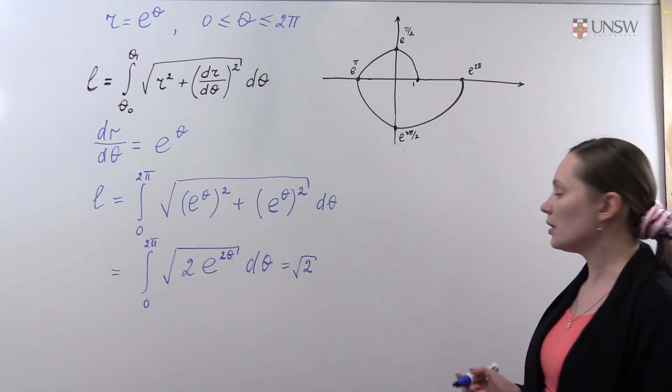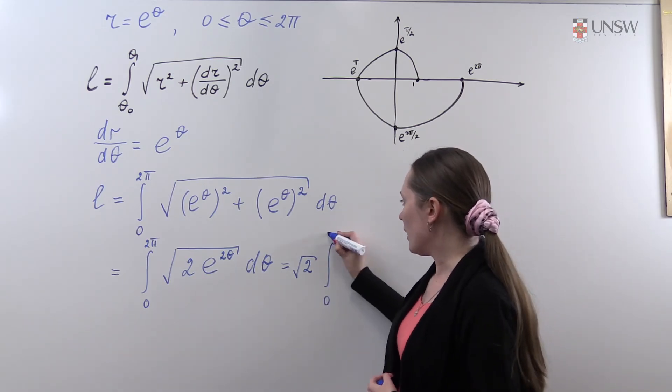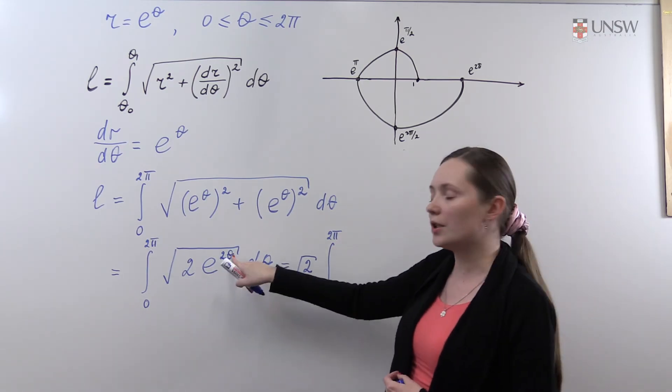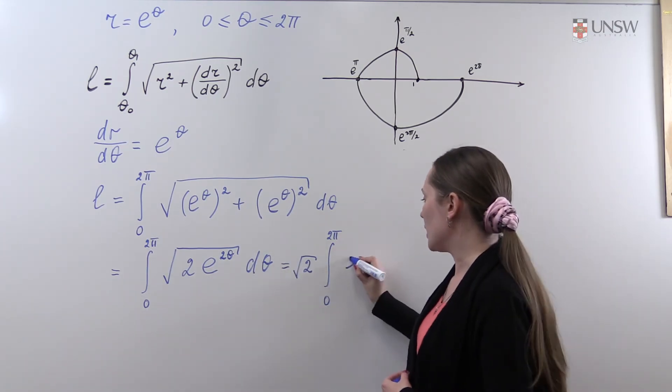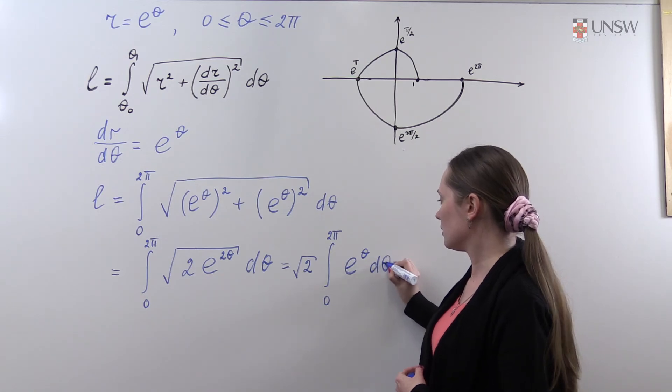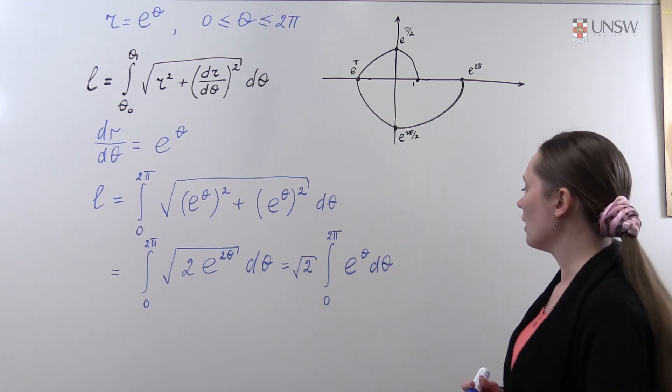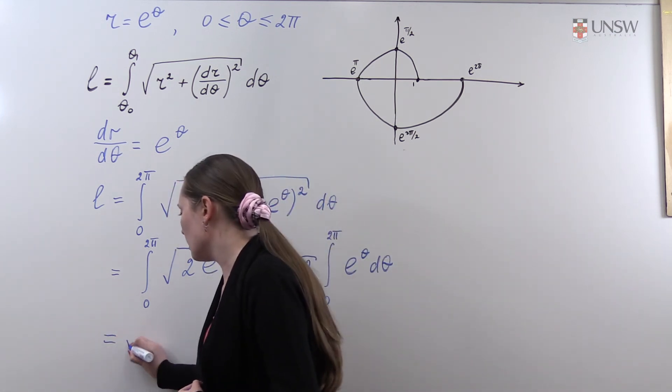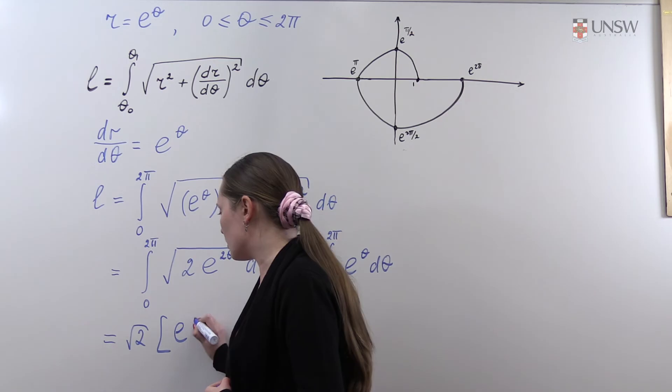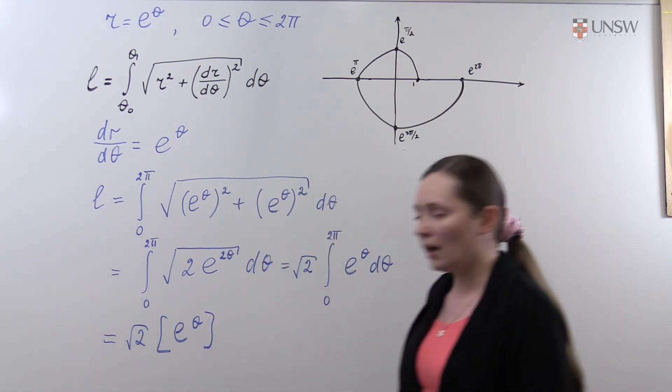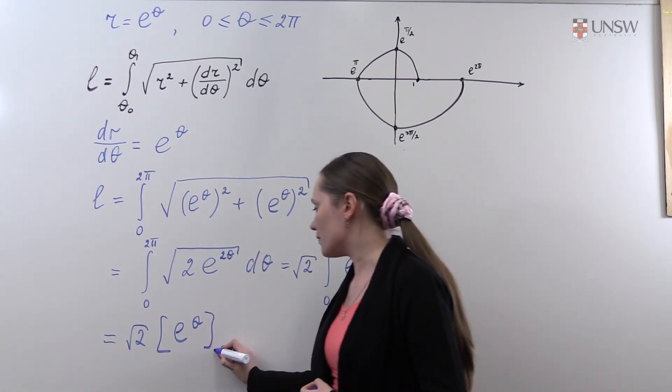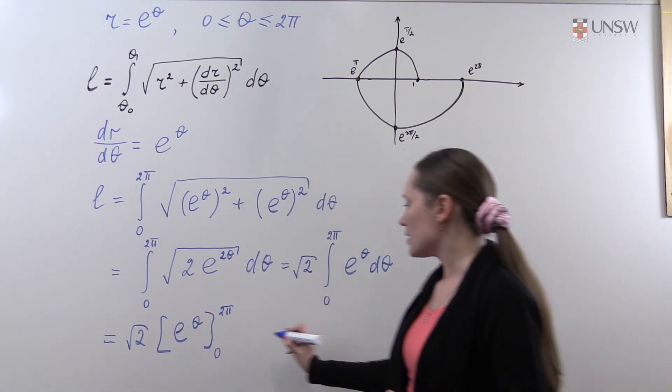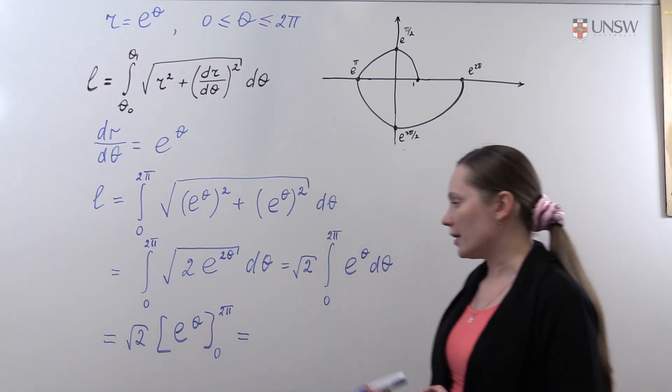Under the integral, we will have the square root of e to the 2θ, which gives us just e to the theta. So integrating e to the theta, we will have e to the theta, and the range of theta is from 0 to 2π.